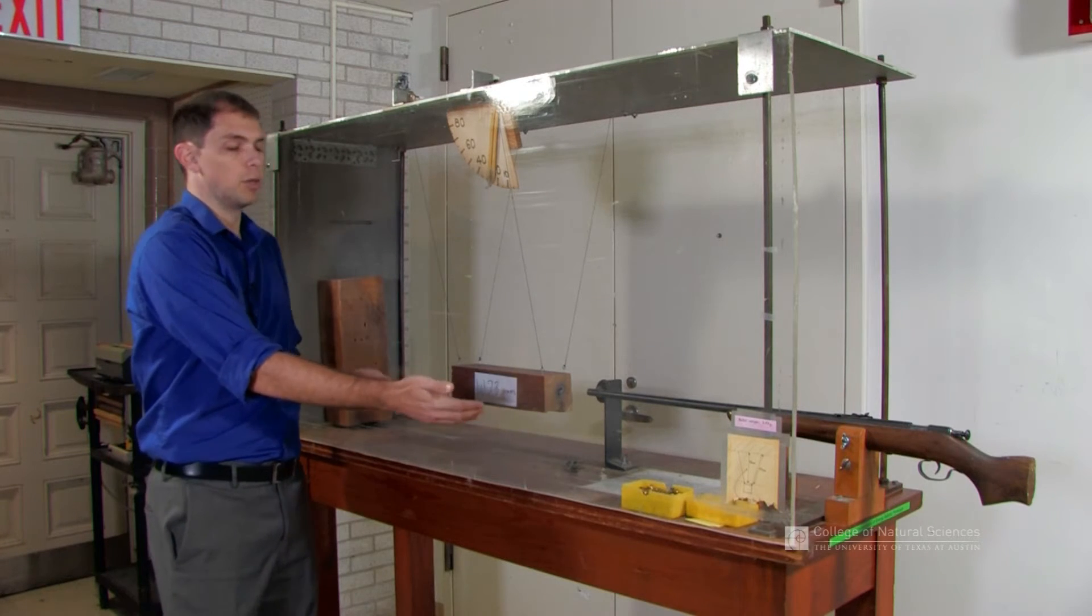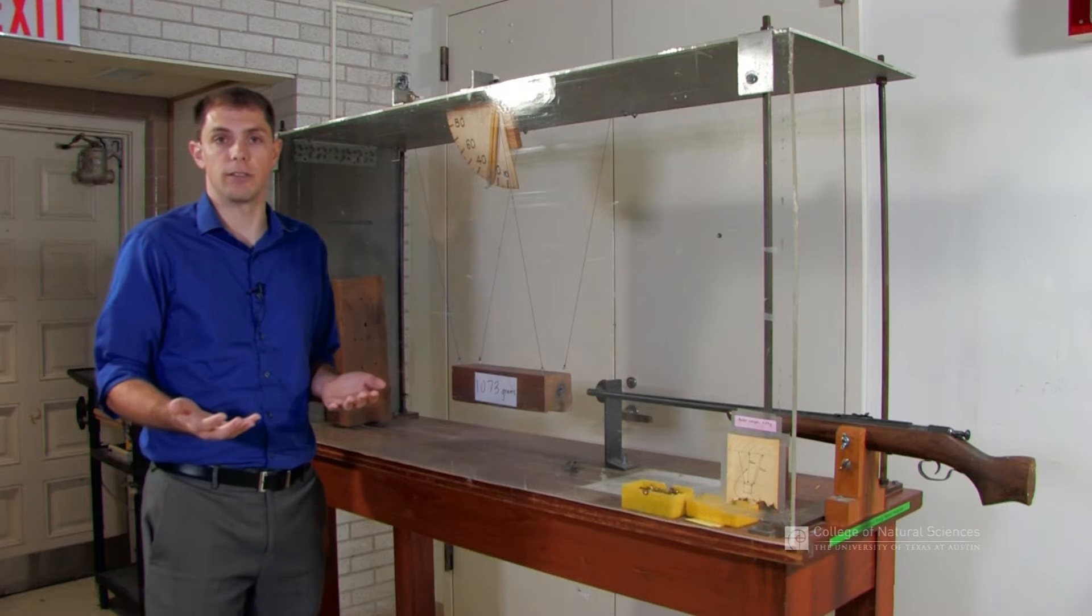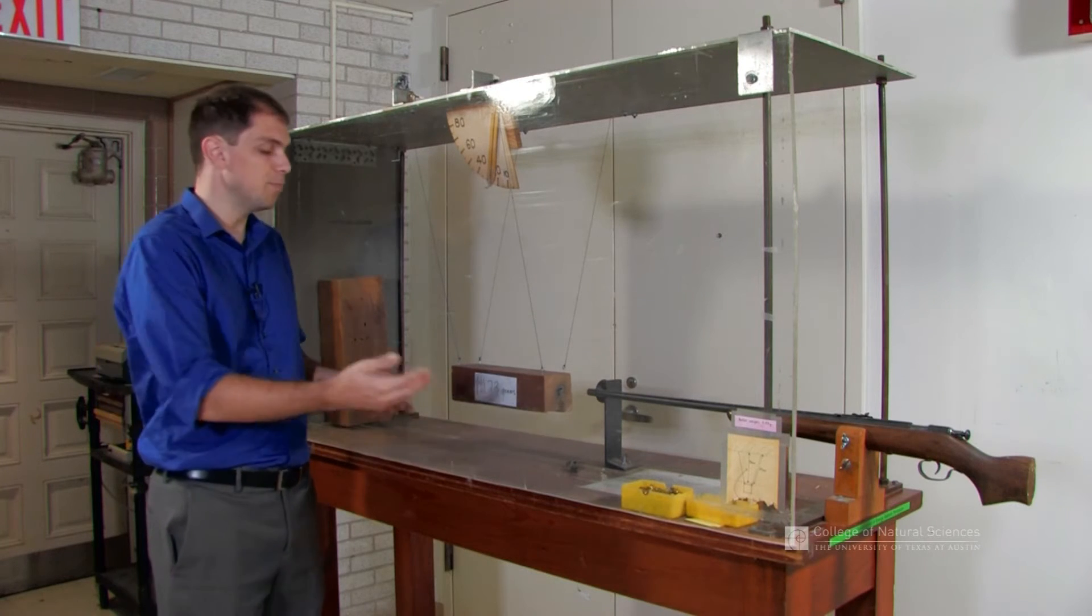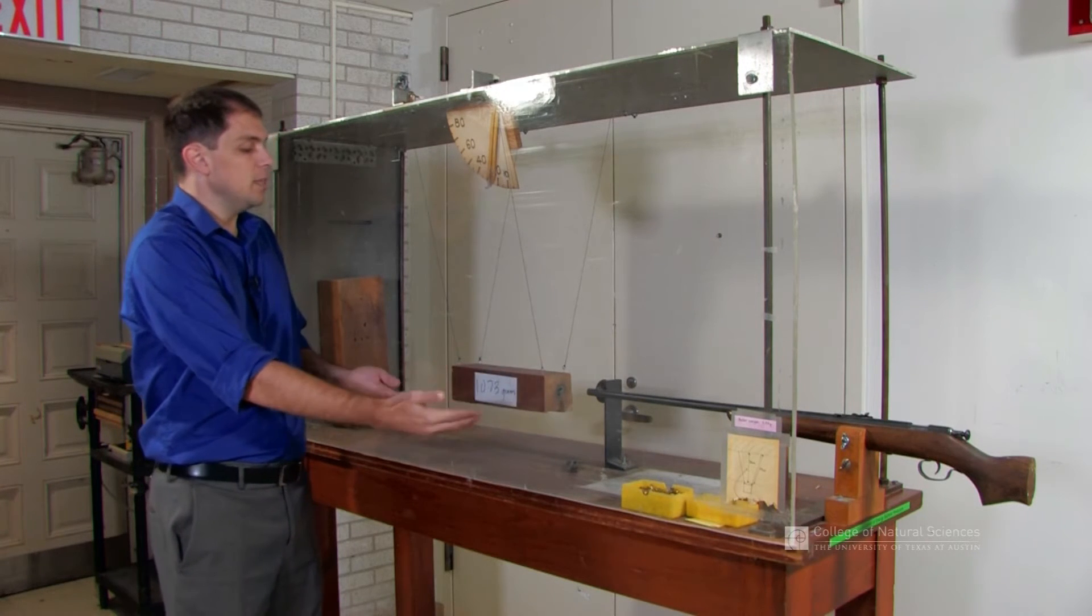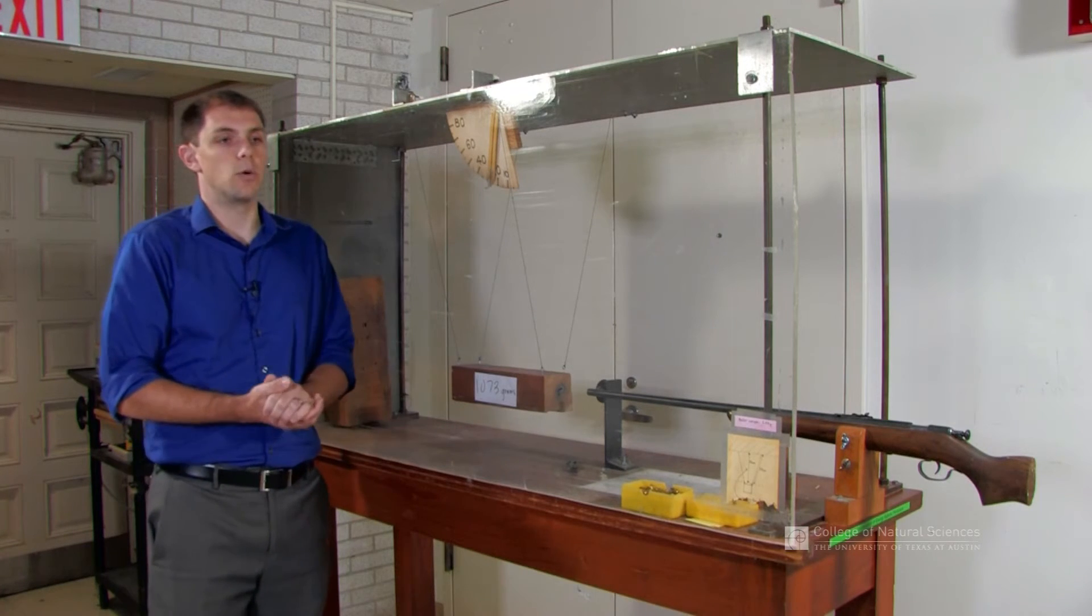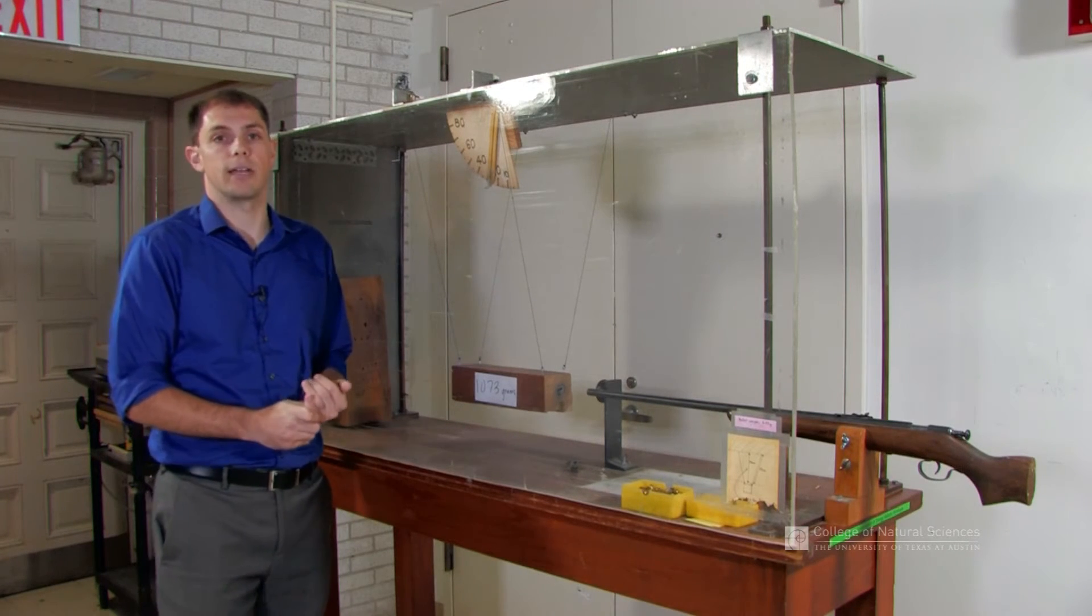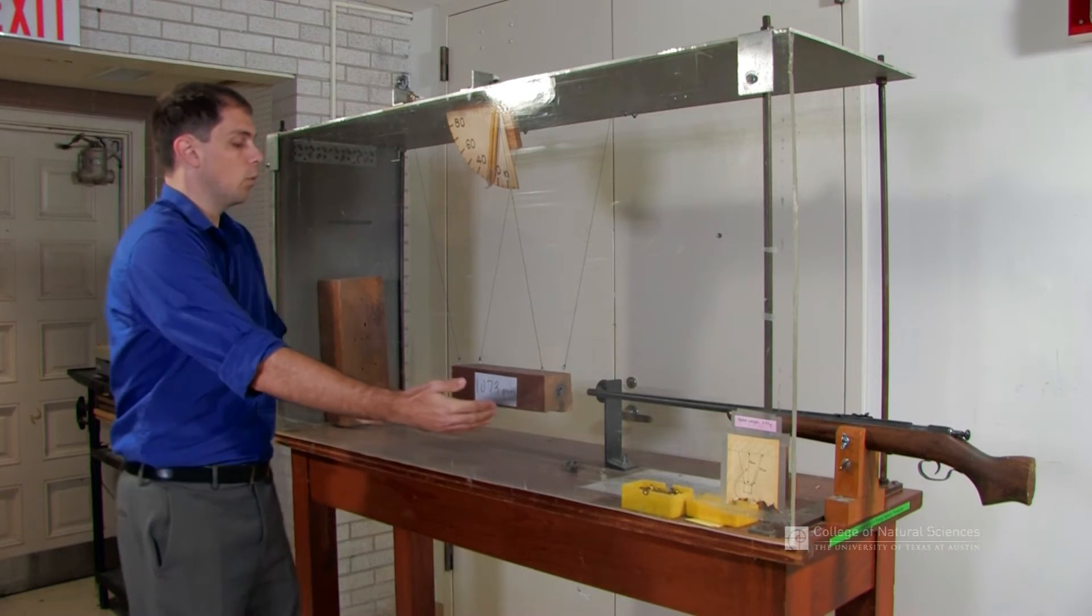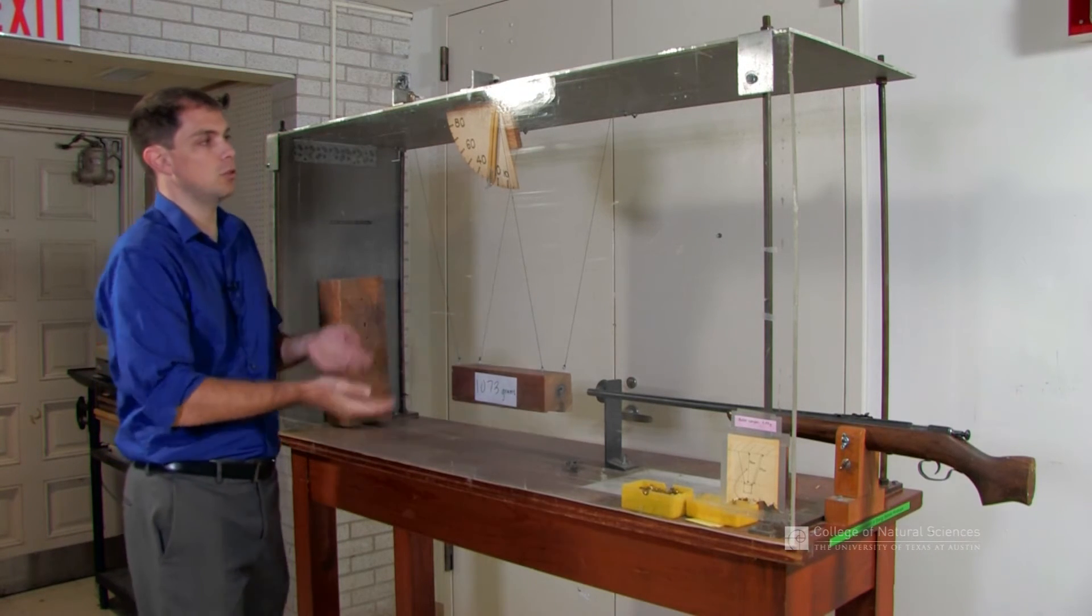The block and the bullet now have some velocity together. We called it the final velocity. But that means that velocity it has—the block, the bullet together—is going to have some initial kinetic energy. It starts at some height zero, and when it swings up to the angle that it's at...